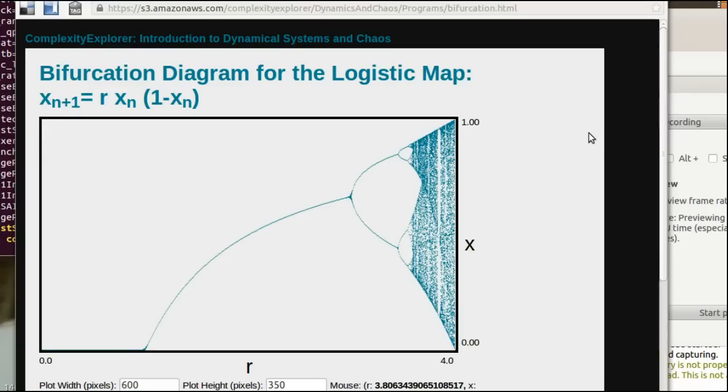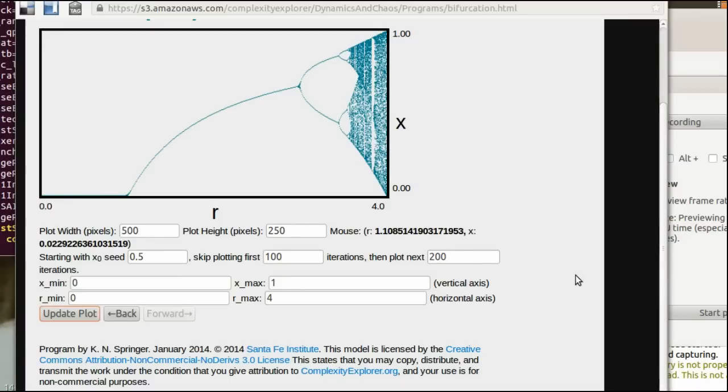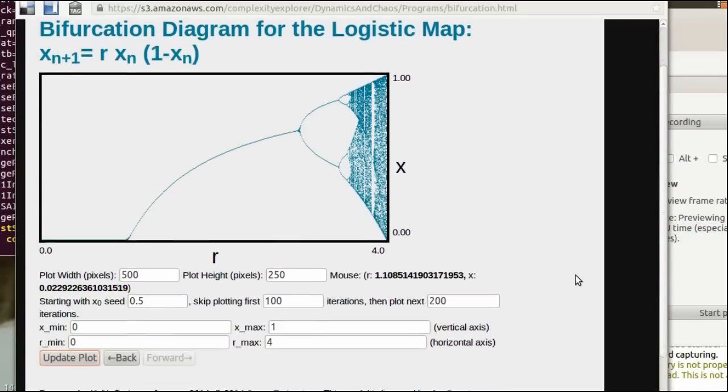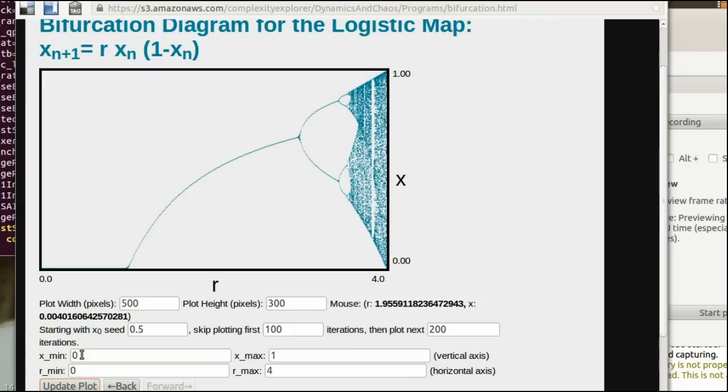So here it is, the bifurcation diagram for the logistic map. And I'll suggest you might need to resize your window, the overall browser window, so it fits well on whatever computer you're working on. One thing you can do is you can change the size of the plot, how big it is on your screen. And in order to make it fit a little better, I'm going to make it a little bit smaller. I'm going to change the width to 500 and the height to 250. I'll click on Update Plot, and now it fits a little better in the screen.